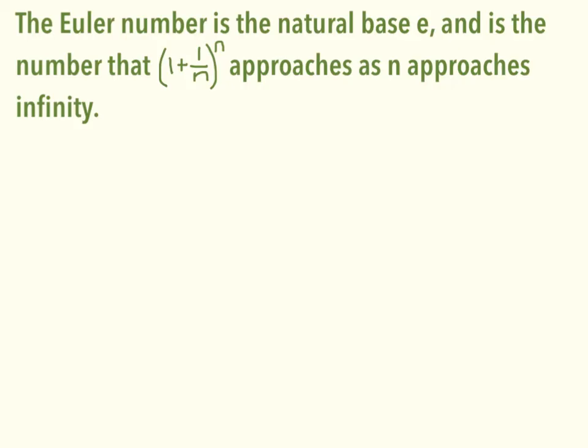Alright, technically, the Euler number is the natural base E. It's the number that (1 + 1/n) raised to the n power approaches as n approaches infinity.